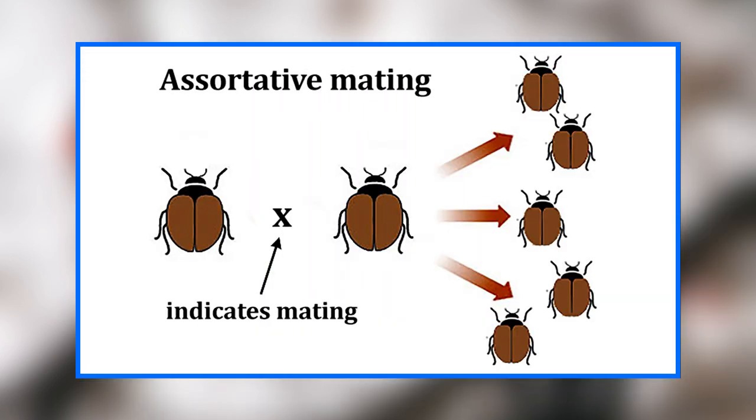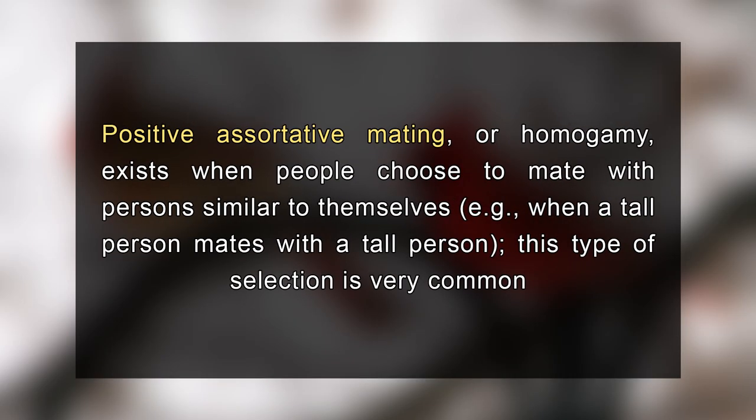Let's start with the introduction. Assortative mating in human genetics is a form of mating in which pair bonds are established on the basis of phenotype — that is the observable characteristics or traits of an organism. For example, a person may choose a mate according to religious, cultural or ethnic preferences, professional interests, or physical traits. Positive assortative mating or homogamy exists when people choose to mate with persons similar to themselves — for example, when a tall person mates with a tall person. This type of selection is very common.